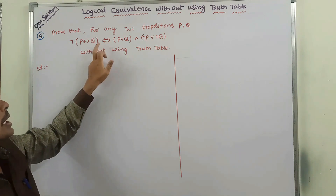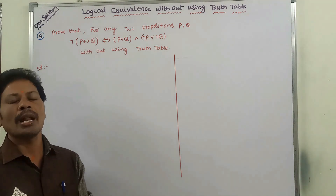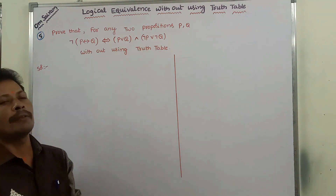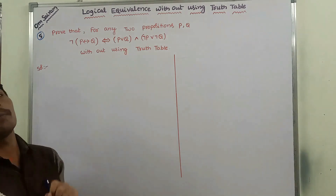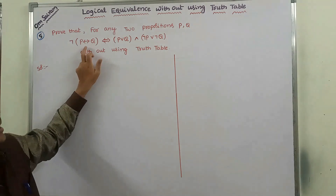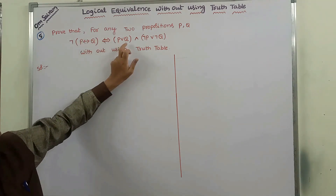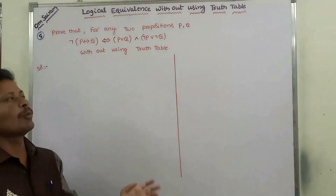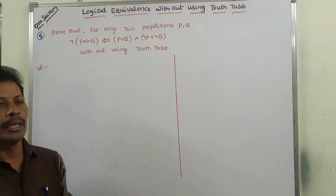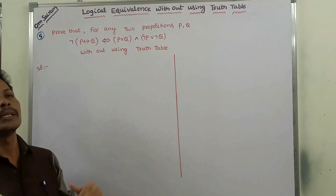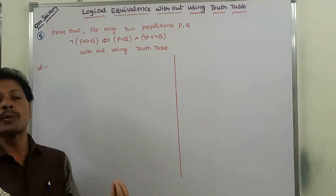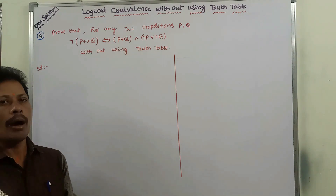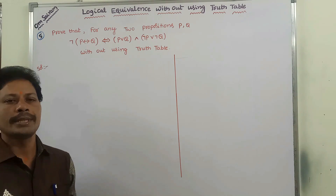Before the logical equivalence symbol, whatever formula is there is the first compound statement. After the logical equivalence symbol, whatever formula is there is another compound statement. We have to show these two are logically equivalent. The procedure is: take the LHS part and show it equals the RHS part, then take the RHS part and show it equals the LHS part.